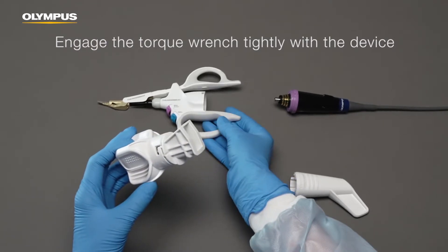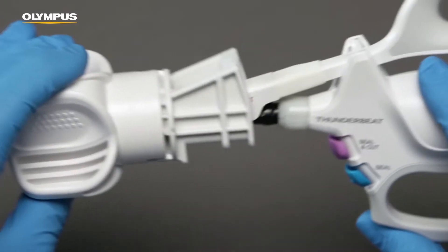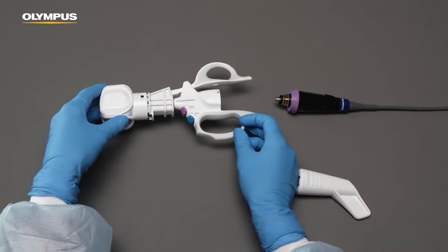First, place the torque wrench firmly on the jaw. Make sure the device and the wrench are firmly engaged.